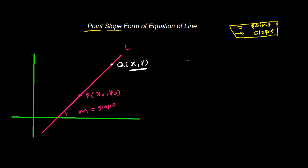Now the slope of the line is m. Since we have two points — the permanent fixed point and the general point — we can simply write the ratio of the difference of the y-coordinates over the difference of the x-coordinates as the slope.